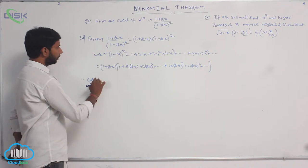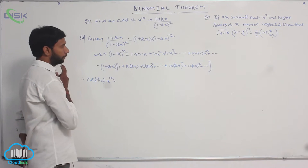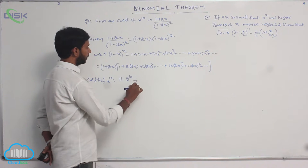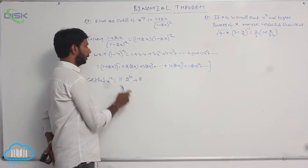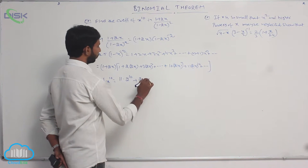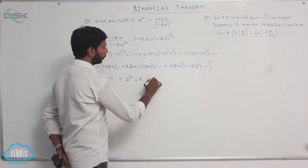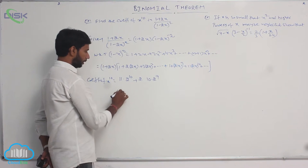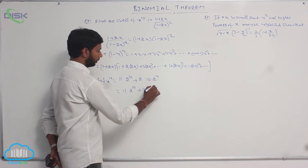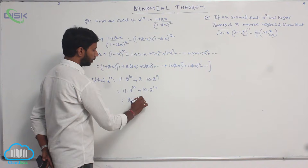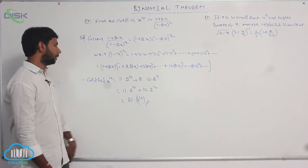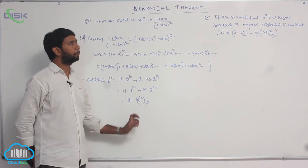The coefficient of x power 10 comes from two terms: 11 into 2 power 10 from the direct term, and from the 1 plus 2x factor, 2 into 10 into 2 power 9, which equals 10 into 2 power 10. So the coefficient of x power 10 is equal to 11 into 2 power 10 plus 10 into 2 power 10, which equals 21 into 2 power 10.